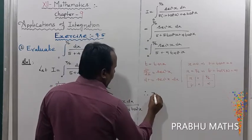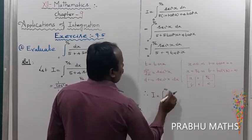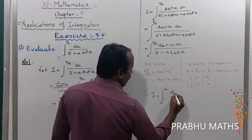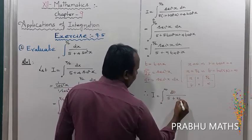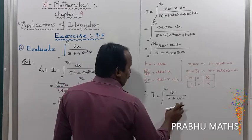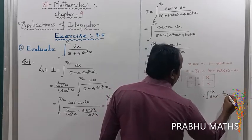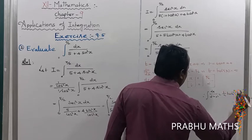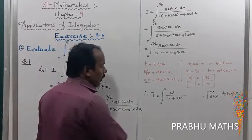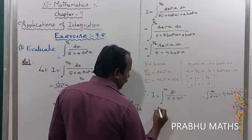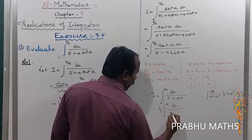Therefore, I equals the integral from 0 to infinity of dt divided by 5 plus 9t². Now recall the formula: integral of dx divided by (a² plus x²) equals (1/a) tan⁻¹(x/a). Factor out 9 from the denominator, giving (1/9) times the integral from 0 to infinity of dt divided by (5/9 plus t²).